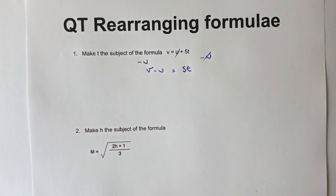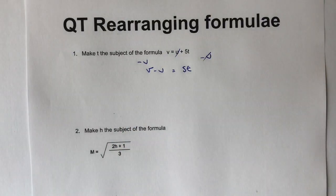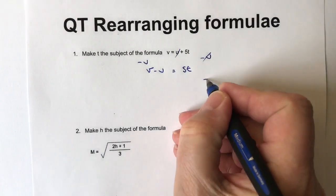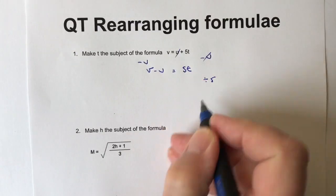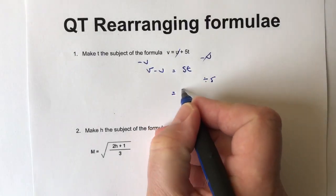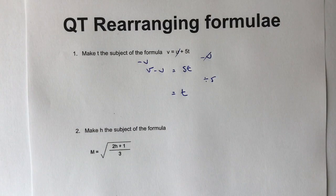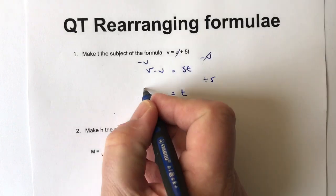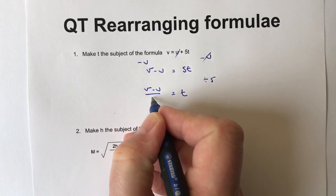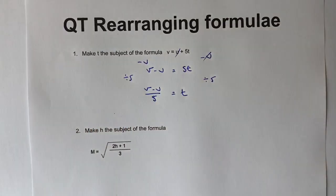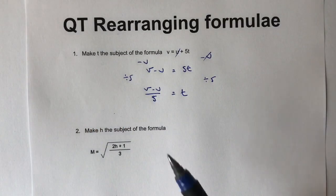So v minus u equals 5 lots of t. If I want to get one lot of t I just divide through by 5, because 5 divided by 5 is 1, which gives us t. On the left hand side I'm going to get v minus u also divided by 5, because I'm dividing that side by 5 as well.